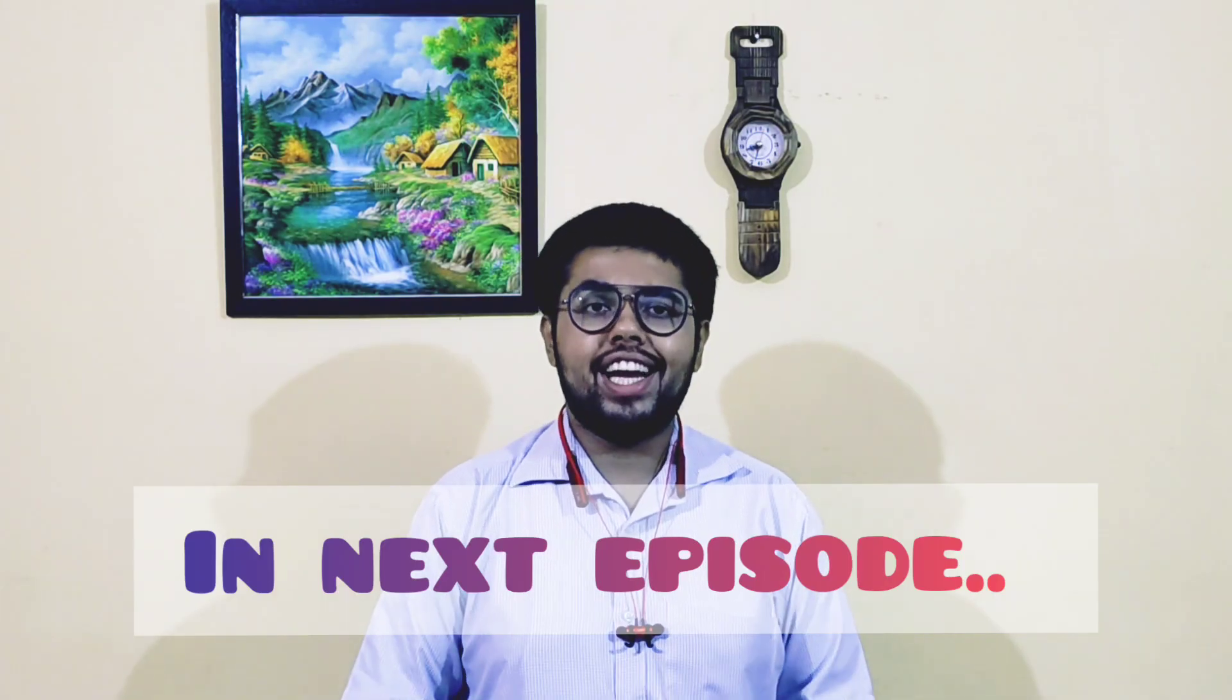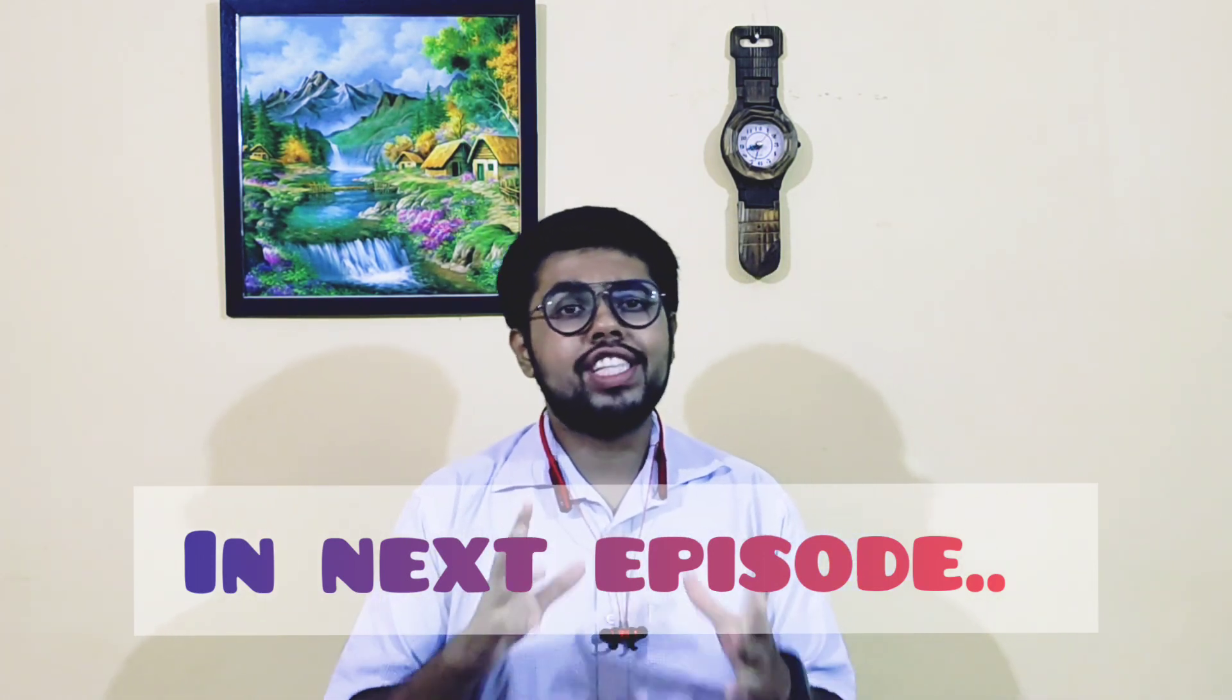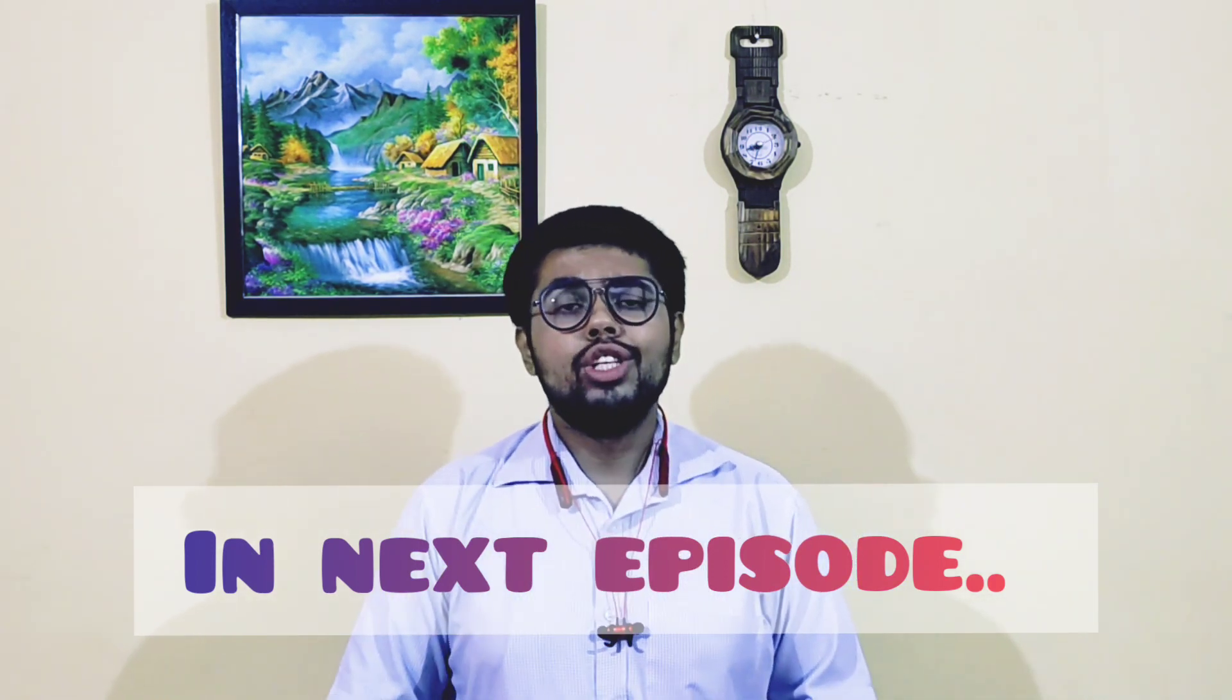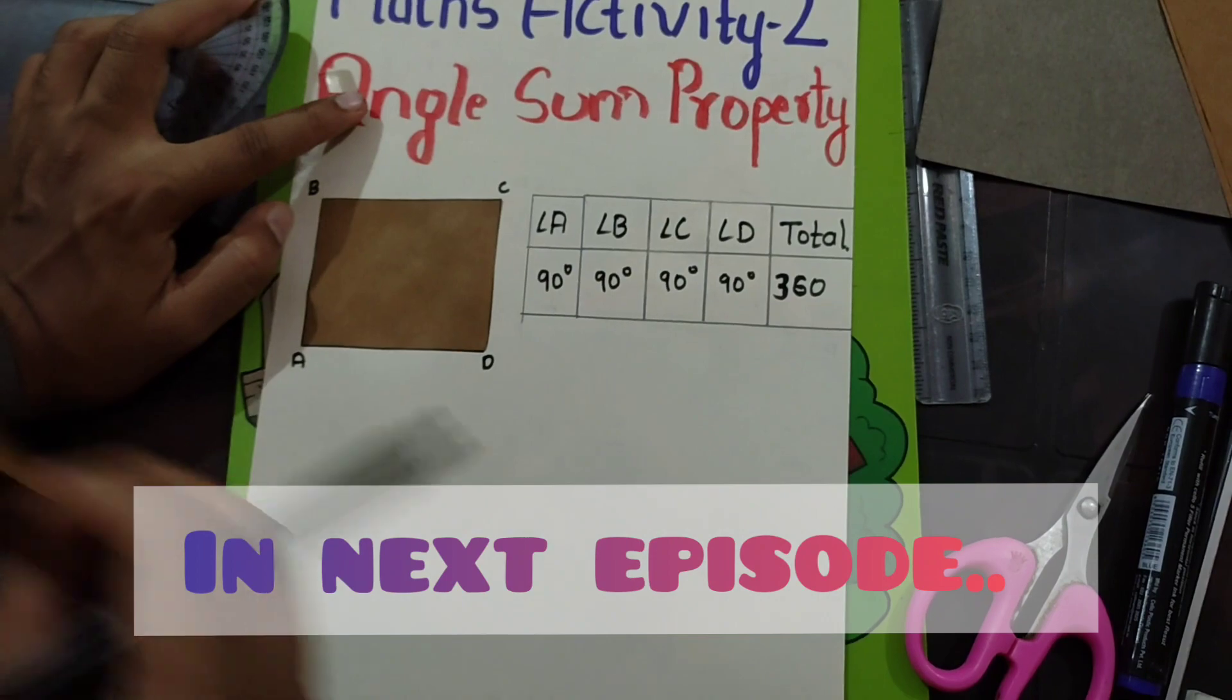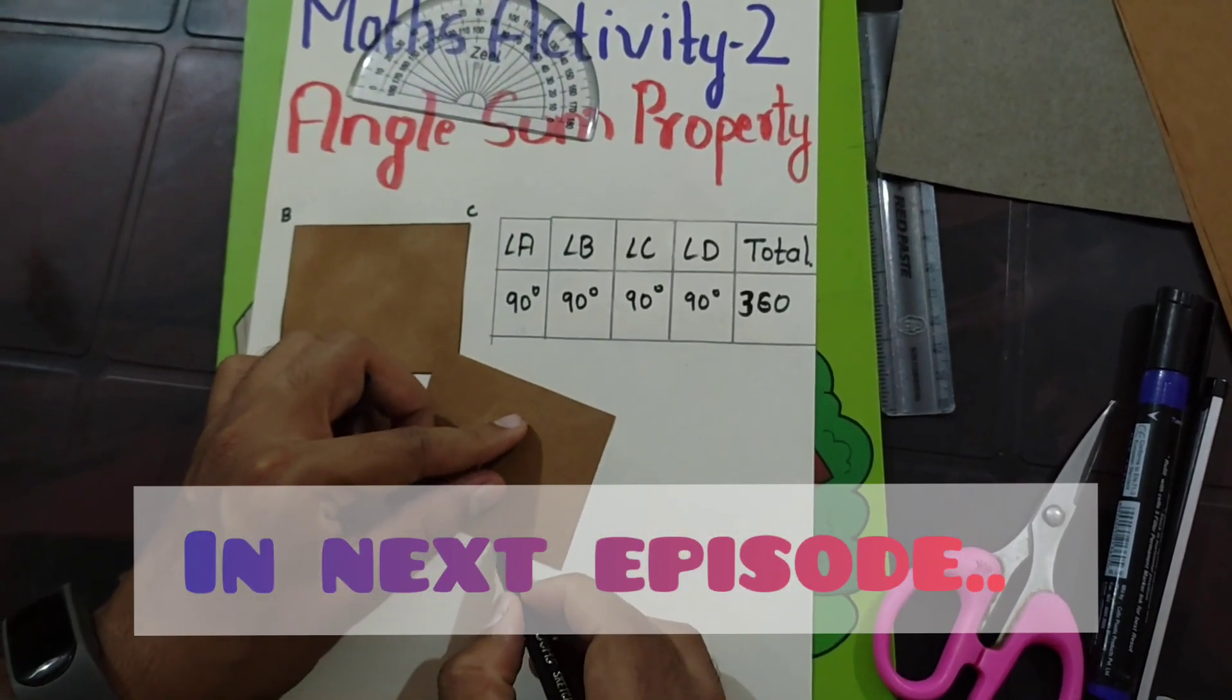Next is the property of a quadrilateral. Quadrilateral is the shape which has four sides. The sum of all angles in a quadrilateral is always 360 degrees. Now let's do the visual proof for that similarly. I will show four angles.